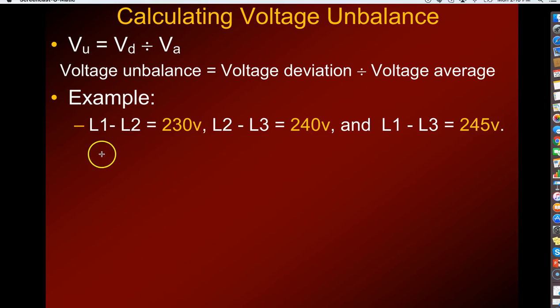You'll take your voltmeter and you will measure incoming power between L1 and L2. Now that's not a minus sign, that's just showing that you measure between L1 and L2. So in this example, you would measure and record 230 volts. Then you'll measure between incoming line 2 and incoming line 3, that's L2 and L3, and you read 240 volts. And then you'll measure across L1 and L3, and in this example, it's 245 volts.